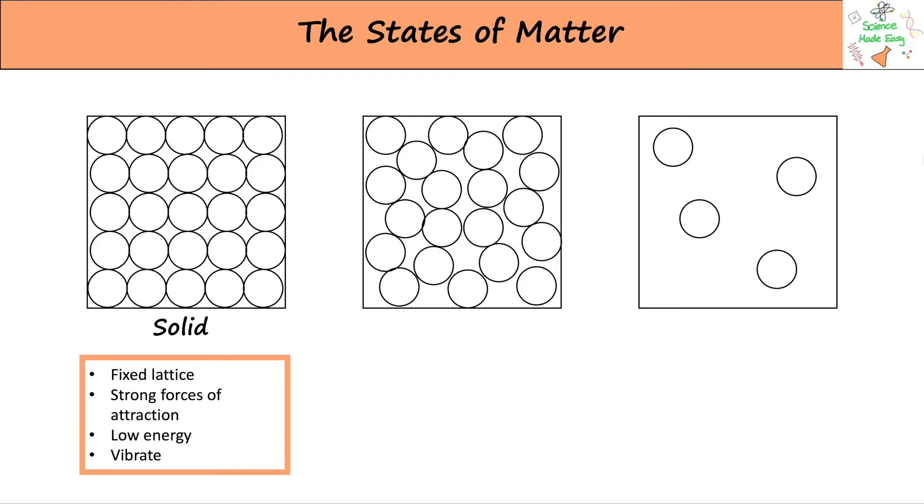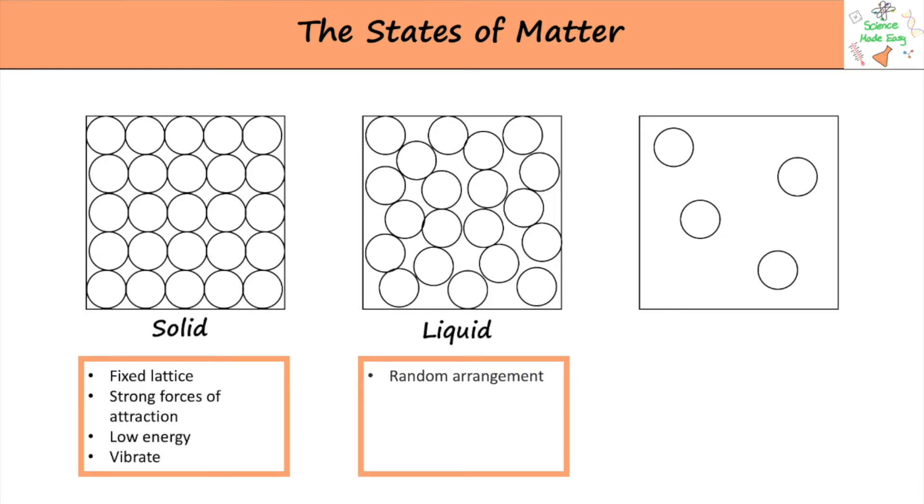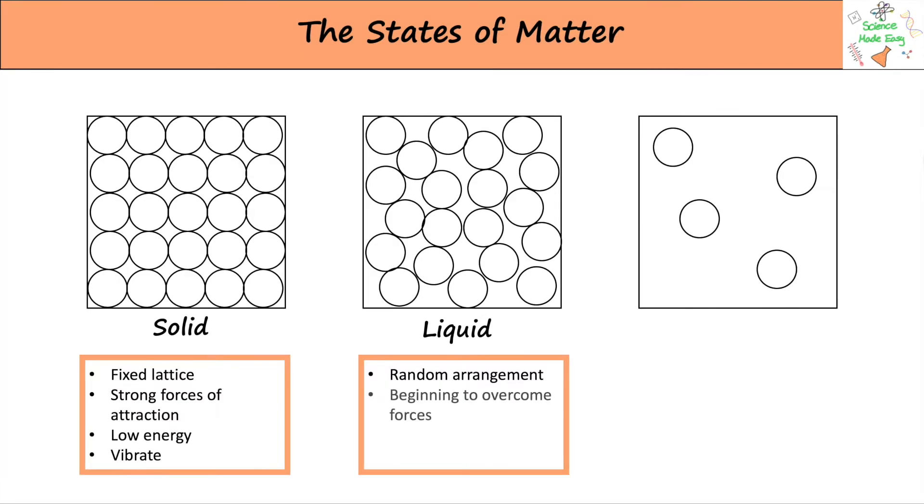The next state is liquid. Liquids have a random arrangement, so the particles have no fixed shape. They can fill the shape of any container. They are beginning to overcome the forces of attraction, so they have more energy to be able to flow and move around a bit more.